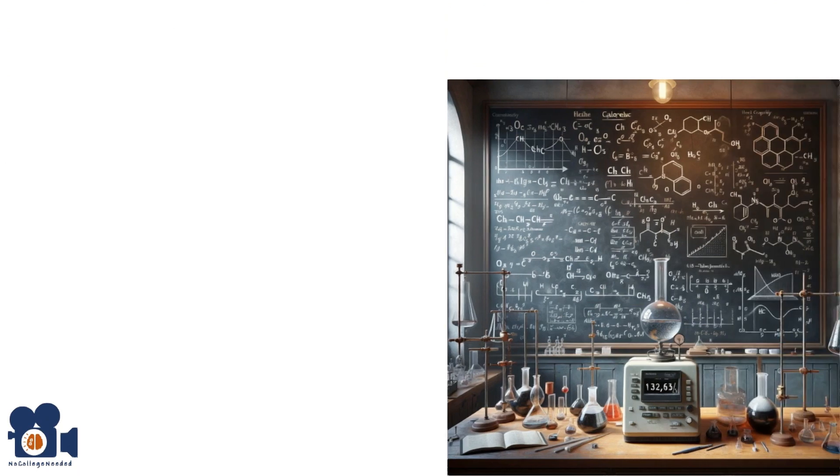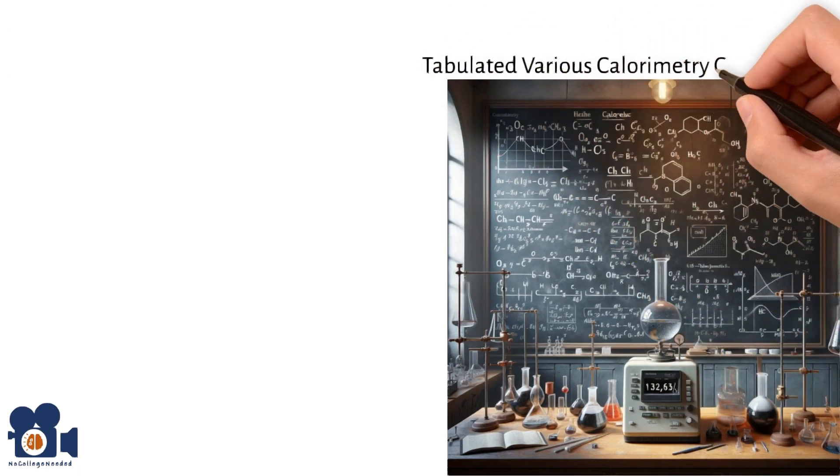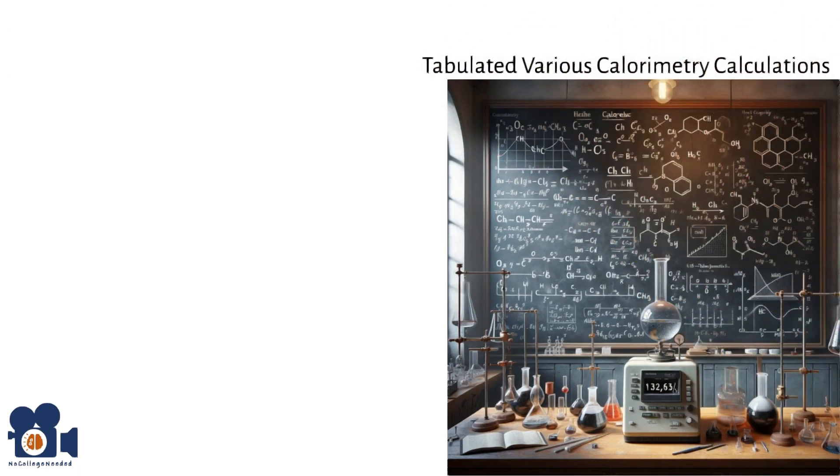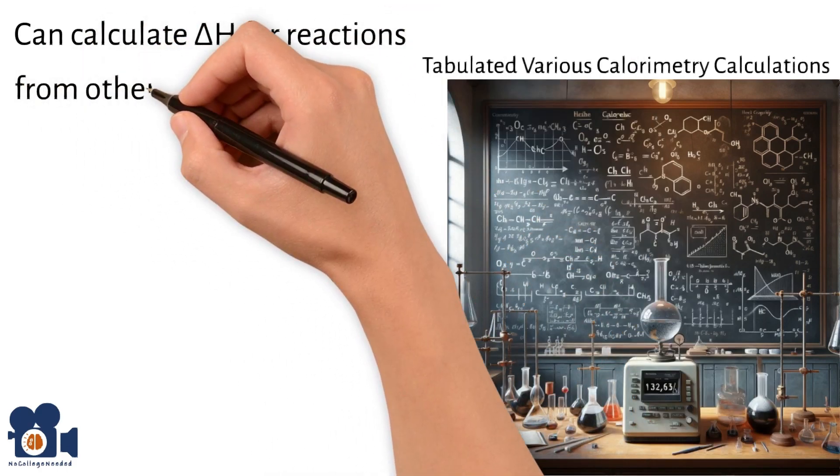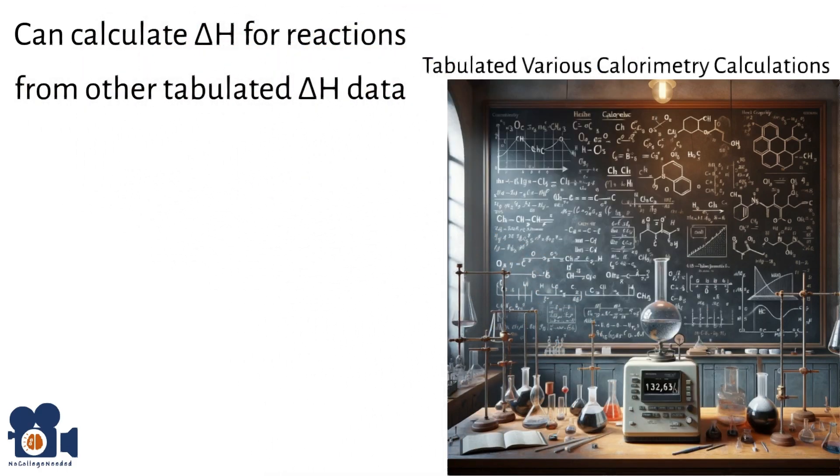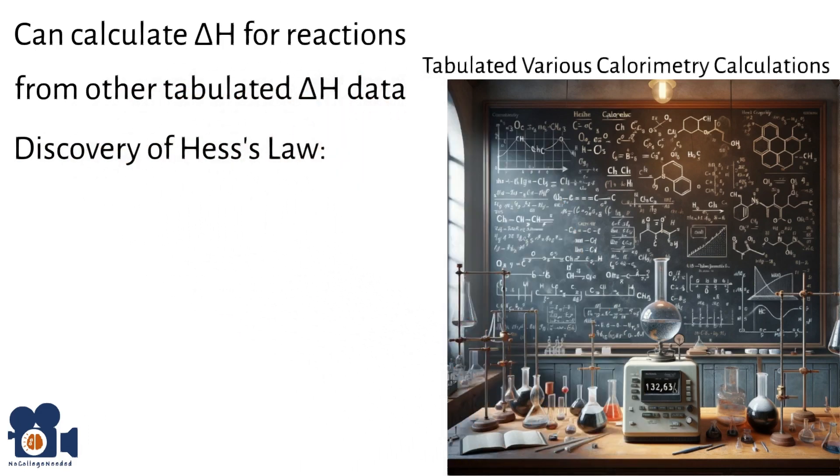Over the years, scientists have tabulated the various calorimetry calculations and found out that they're usually able to calculate delta H for any reaction from other tabulated delta H values, thereby saving time and not having to do all the calorimetric measurements. This led to the discovery of Hess's law.